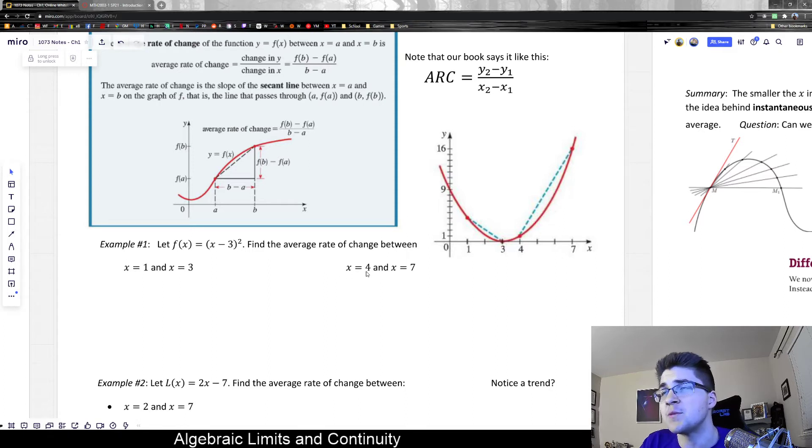The first one says between x = 1 and x = 3, and the second example says between x = 4 and x = 7. So the first thing about an average rate of change is you need a margin or you need an interval over which you're calculating it for.